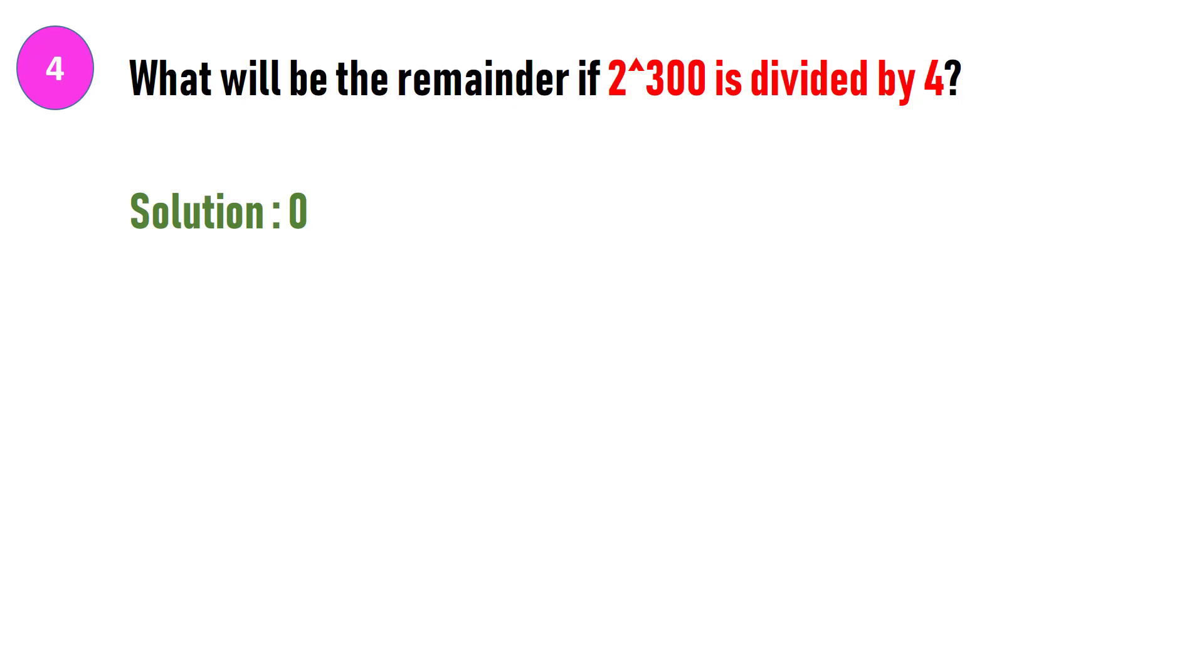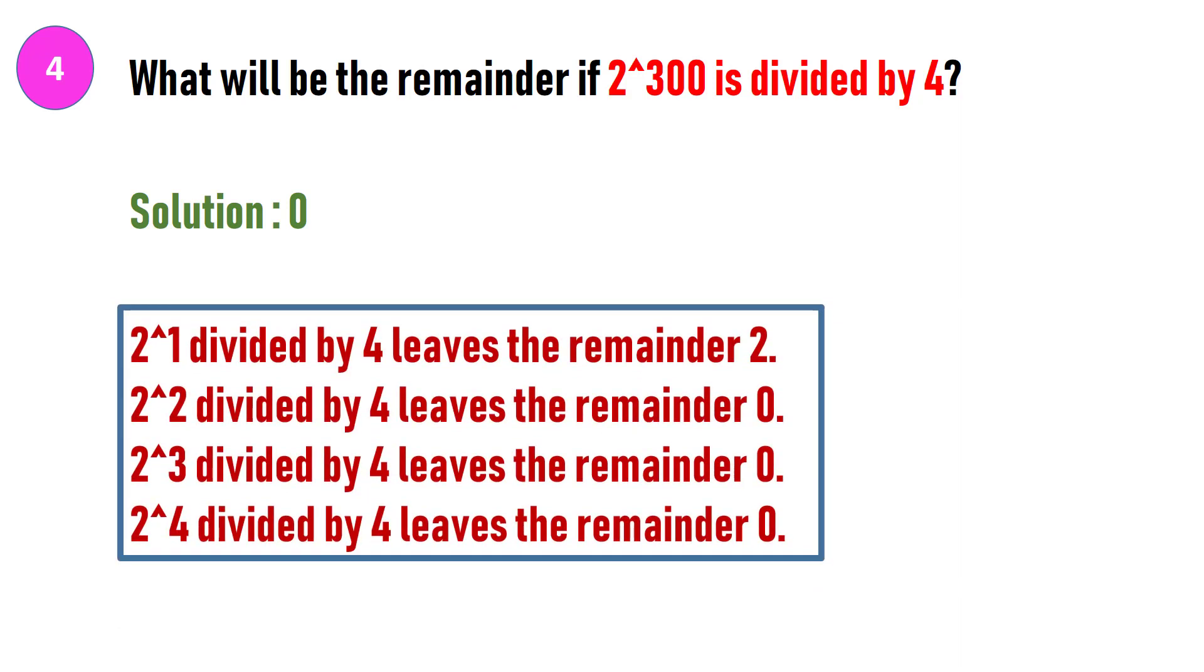The answer is zero. Now if you go on calculating 2 to the power of 300, you will lose so much time and it might not even be feasible to carry out so long of calculations. Thus, we will make use of a trick here. We will calculate the remainder of each power of 2 till we come across a pattern.